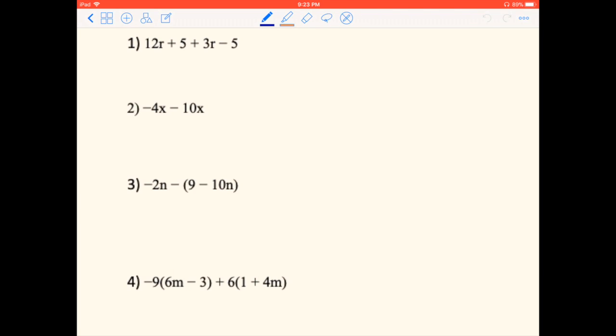As we discussed in the previous lesson, we're going to talk about combining like terms. Say we have one of those distribution problems and we had two numbers by themselves. What do we do from there? How do we make these equations simpler? When we have a question like number one, we have 12R plus 5 plus 3R minus 5.